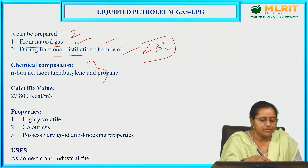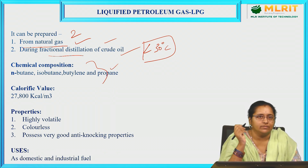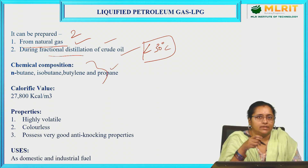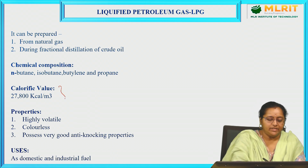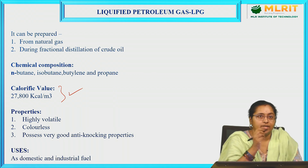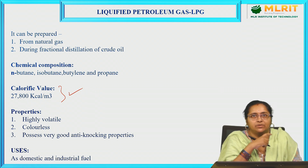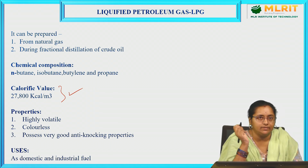Coming to LPG's chemical composition, it contains butane, isobutene, butylene, and propane. Butane and isobutene are the major components, while butylene and propane are the minor components. Its calorific value is 27,800 kilocalories per cubic meter — very high. Compared to natural gas at around 14,000 kilocalories per cubic meter, LPG's value of 27,800 is significantly higher.